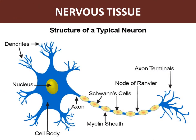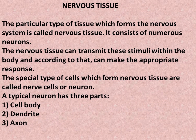This is a diagram of nervous tissue, which is really important. In this chapter we will cover nervous tissue briefly; more detail will be provided in the 10th chapter. The particular type of tissue which forms the nervous system is called nervous tissue. It consists of numerous neurons. The nervous tissue can transmit stimuli within the body and make the appropriate response. The special type of cells which form nervous tissue are called nerve cells or neurons. A typical neuron has three parts: 1. cell body, 2. dendrite, 3. axon.